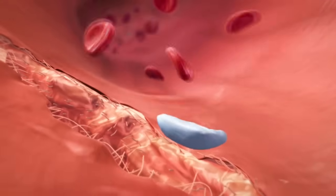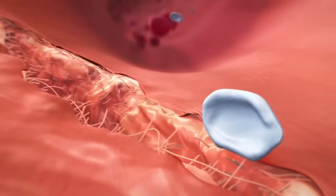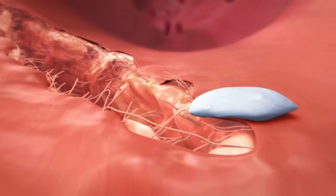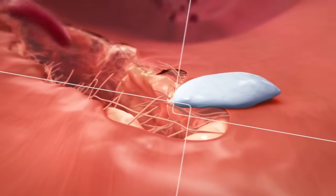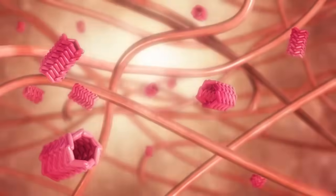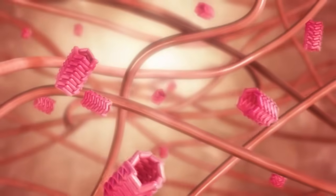In a first step towards clot formation, platelets are recruited to the site of vessel injury by now exposed molecules of the vessel wall, such as collagen and von Willebrand factor.